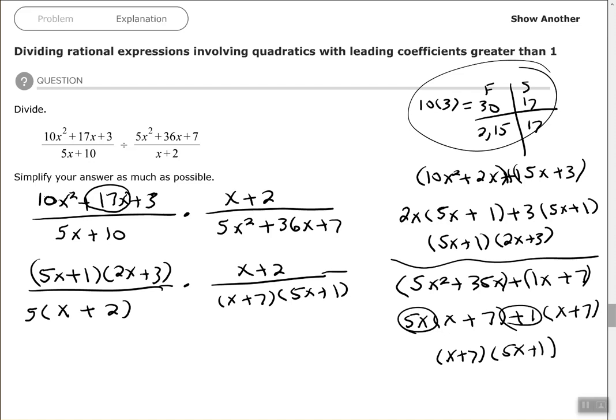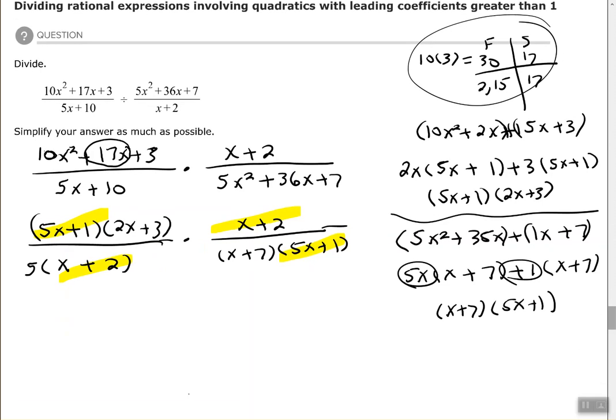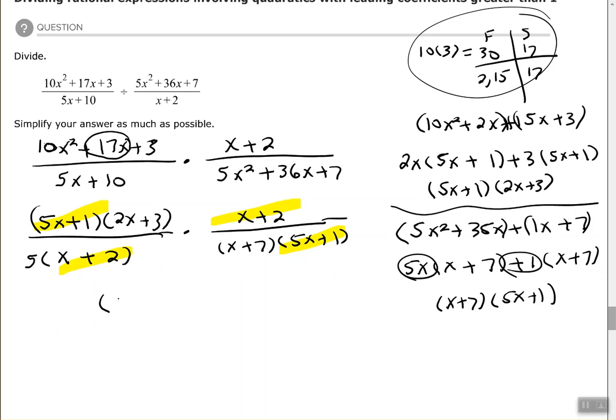Now that we have it completely factored, now we need to simplify. So (5x + 1) in my numerator, (5x + 1) in my denominator. (x + 2) and (x + 2). We cancel out those common factors, write down what's left in one fraction.